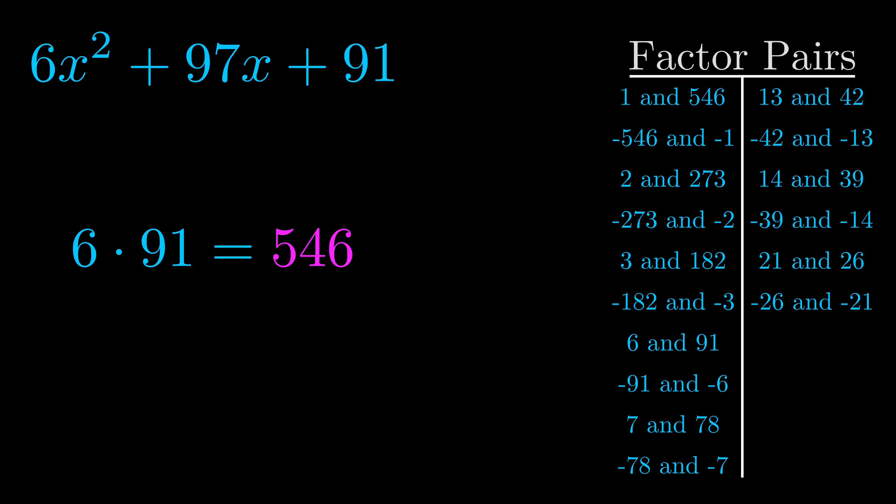The b value is the coefficient on the x term. That's the middle term, the one that we haven't done anything with yet. And really this is the only factor pair that we need.